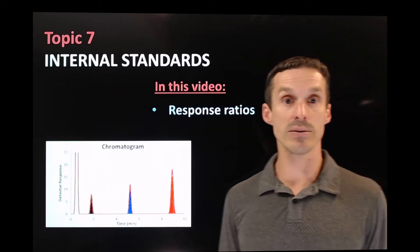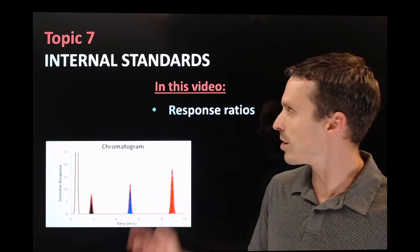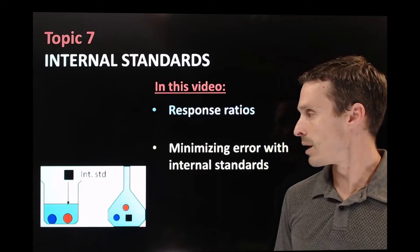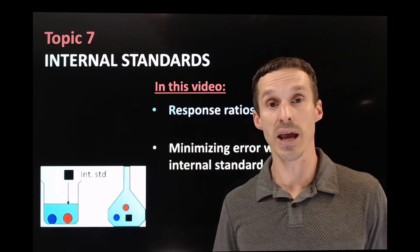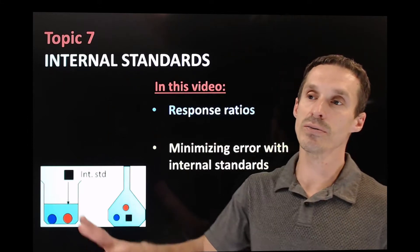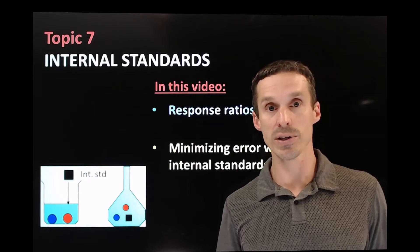Internal standards are another way to do that. Internal standards make use of a separate compound and this thing called response ratios. The big goal of an internal standard is basically to get the answer more correct. We're using internal standards to better calibrate the variation that we have in our signals.